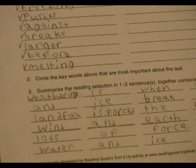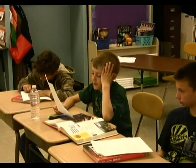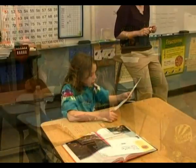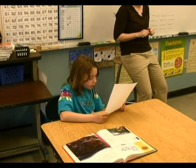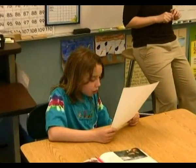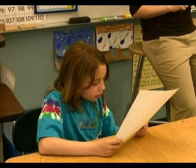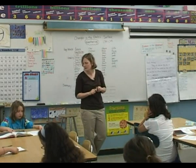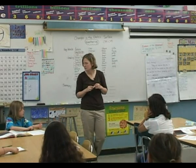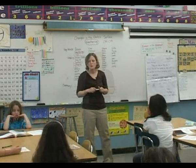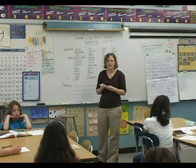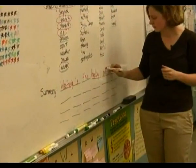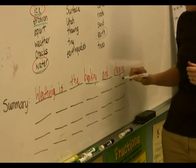Okay, it looks like we've got our summaries mostly written. Does anyone want to share them? Weathering is a breaking of rocks that get chipped away by wind, water, and ice. Weathering is when water and ice break rocks. Landform is forced into changing. Wind and earth have lots of force. The water and ice break — what do they break, Sylvia? The rocks. One thing I heard in everybody's summary is what weathering is — weathering is the breaking and changing of rocks.